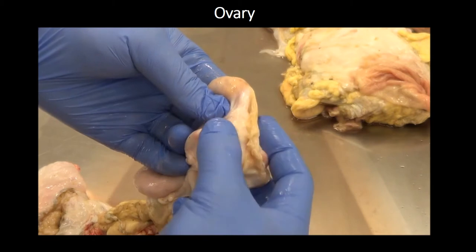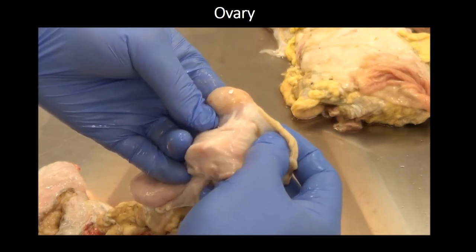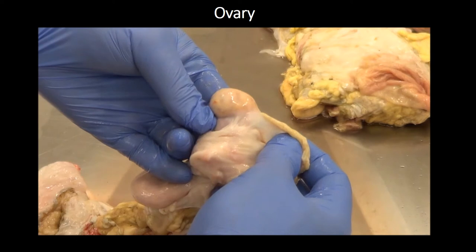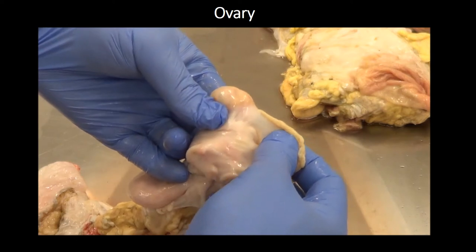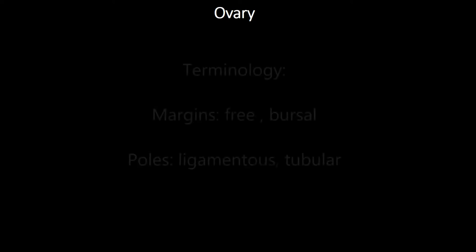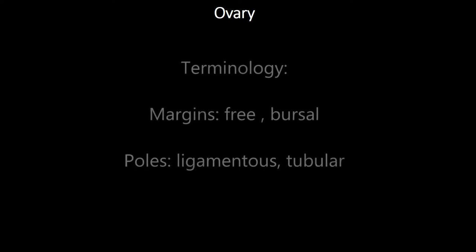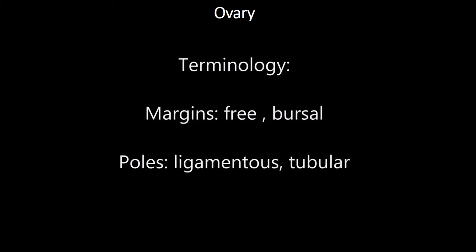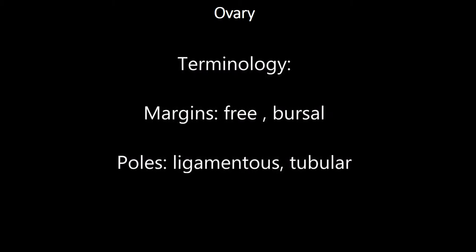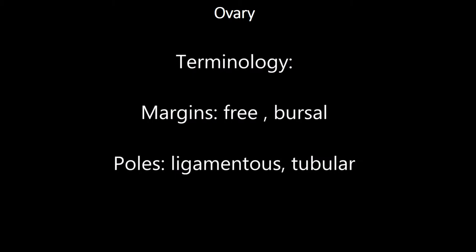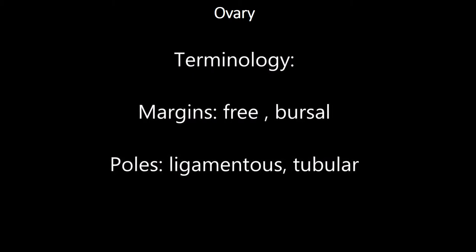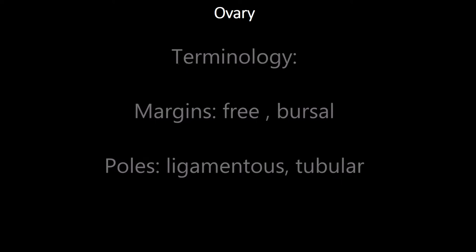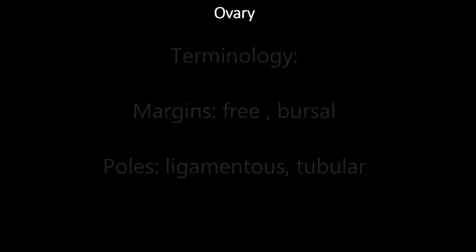When palpating the ovaries of the cow per rectum it's important to have some sort of system to orientate you. For example, you may want to describe the position of a corpus luteum or of a very large follicle. You can't use the normal anatomical directions like cranial, caudal, medial, and lateral because the ovary is so mobile and what was cranial five minutes ago might be lateral now. Instead we use the relative location of the surrounding anatomy to describe the orientation of structures on the ovary.